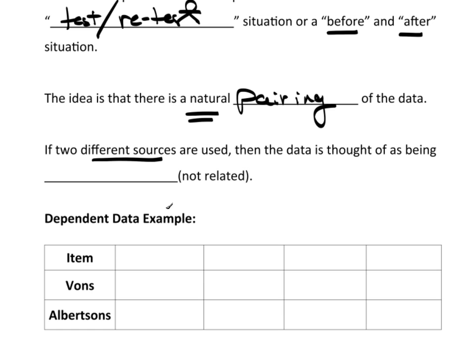If two different sources are used, then the data is typically thought of as being independent. In other words, they're not related.